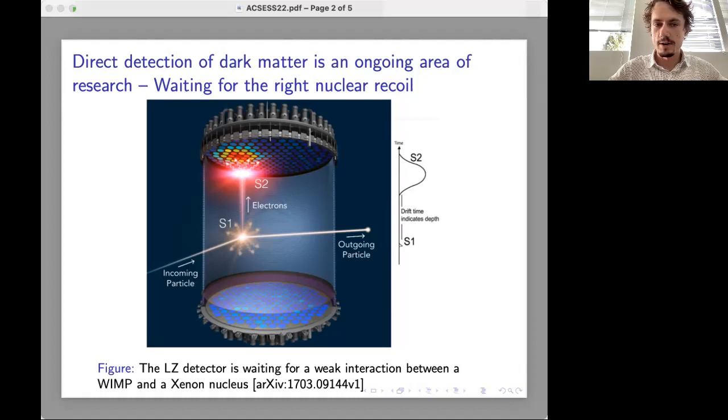The idea behind direct dark matter detection is simple. You bring together a large amount of very heavy atoms in a pure and isolated environment and then you count up the event rate of nuclear recoils. That is the rate at which nuclei in the detector are knocked around by otherwise unseen particles that are unexplained by our current theory.